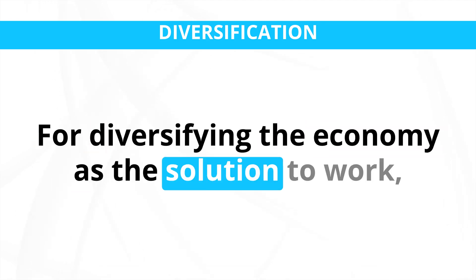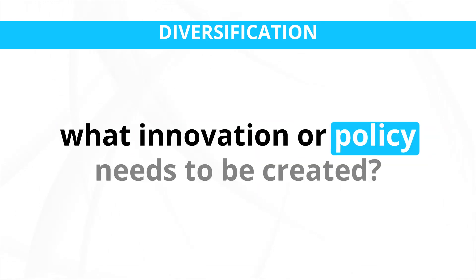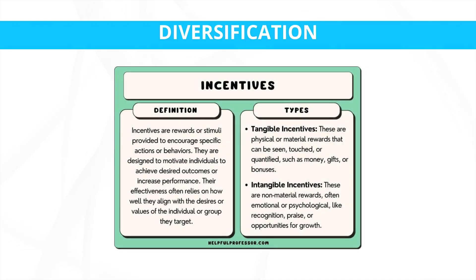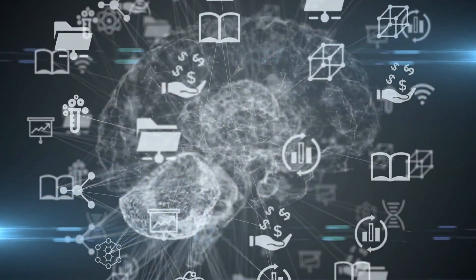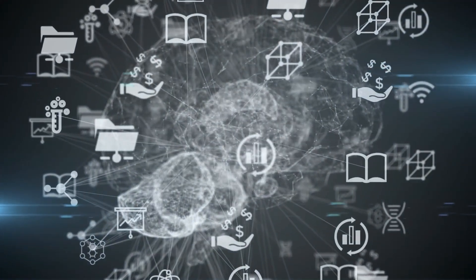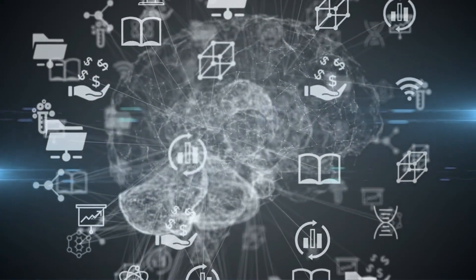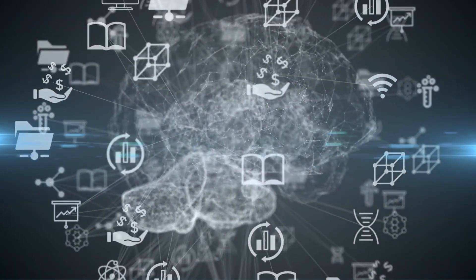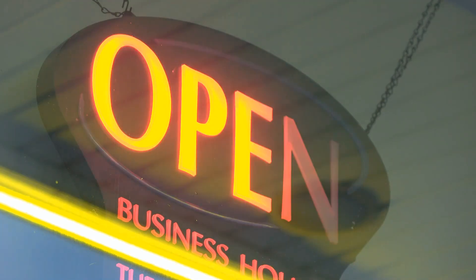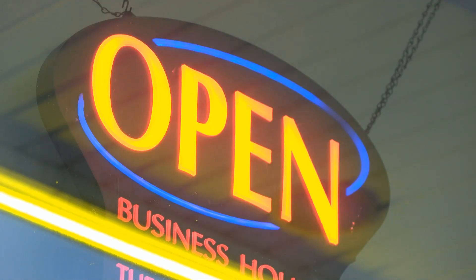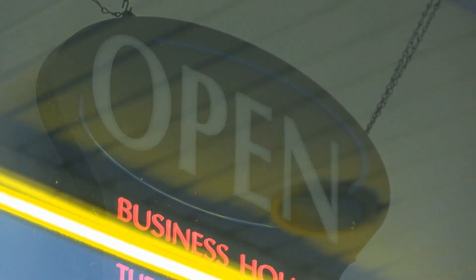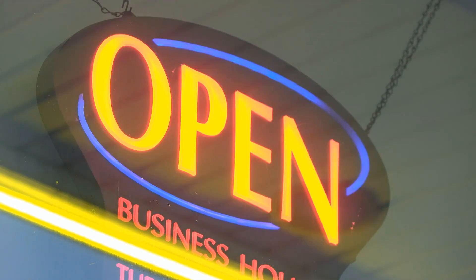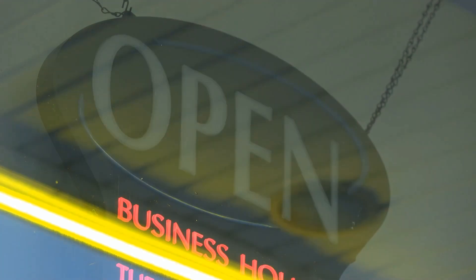For diversifying the economy to work as a solution to poverty, what innovations or policies need to be created? Economic incentives: implement targeted economic incentives and tax breaks to attract investment and encourage the growth of new industries. Education and training programs: develop programs that align with the needs of emerging industries, ensuring a skilled and adaptable workforce. Support for small and medium-sized enterprises (SMEs): SMEs are often engines of diversification, so implement policies that ease the regulatory burden and provide financial support to SMEs.